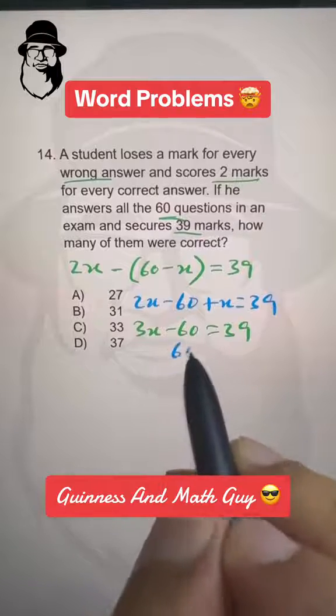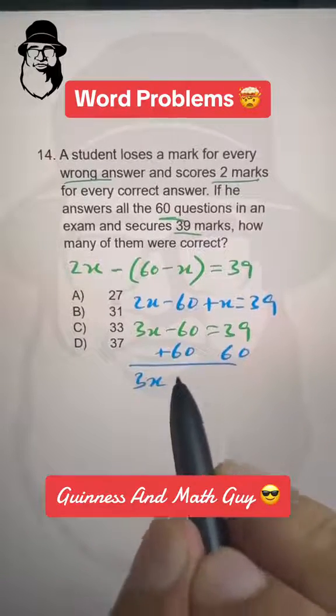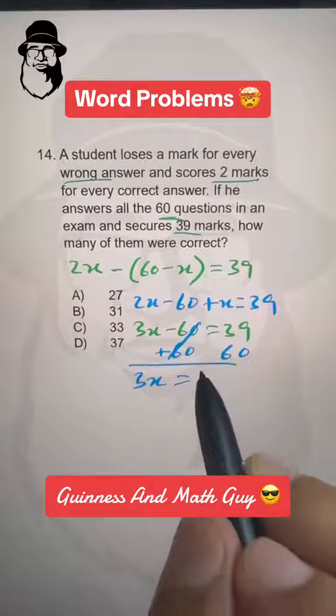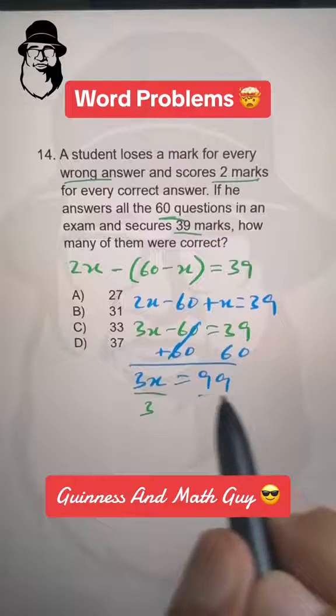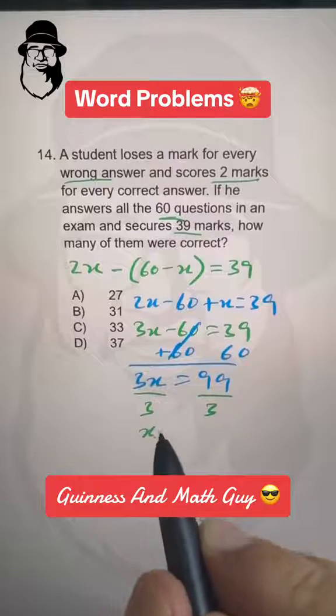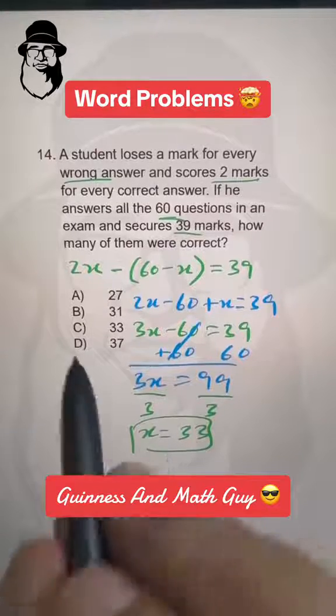Add 60 to both sides to get 3X equals 99, and now divide both sides by 3 to get X equals 33. That's our answer, choice C.